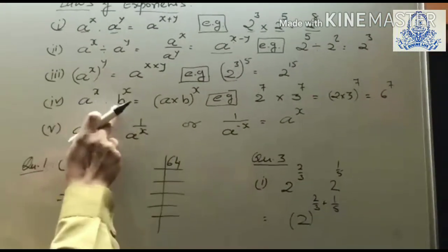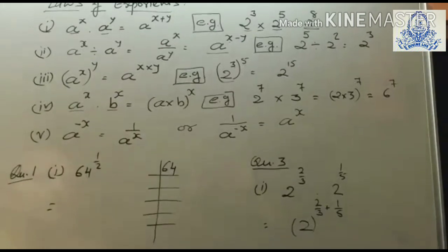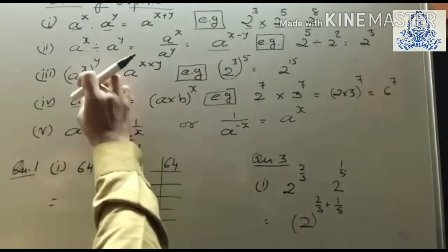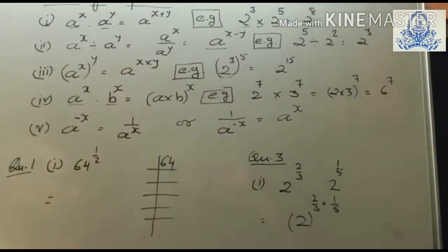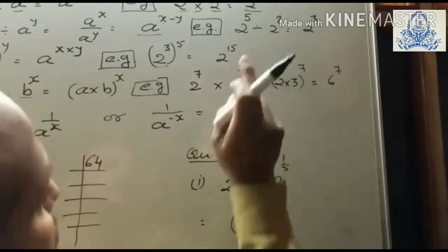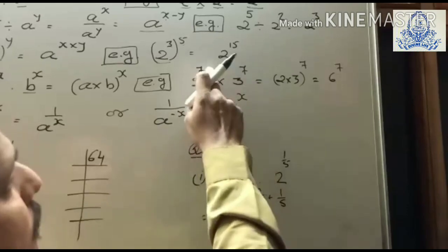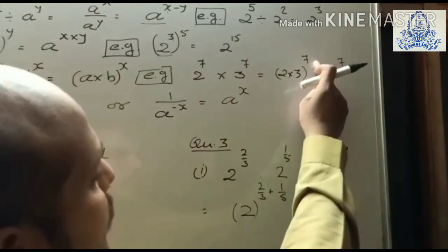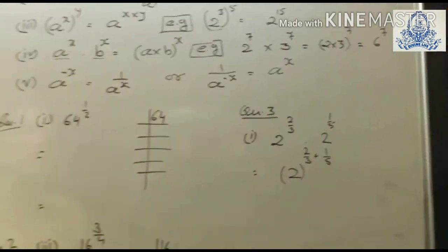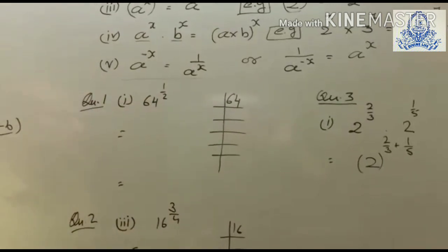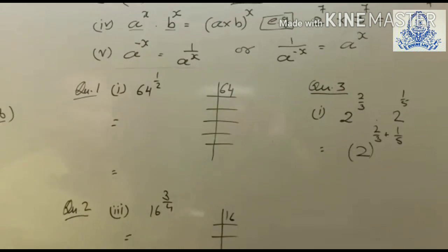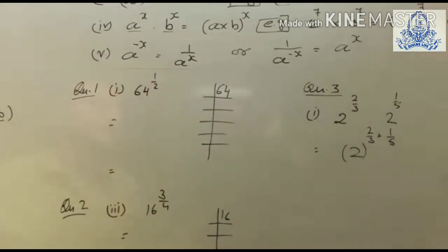Rule 4: If the bases are different but exponents are the same, multiply the bases and keep the common exponent. For example, 2⁷ × 3⁷ — base is different but power is same, so multiply the bases: 6⁷. Rule 5 (reciprocal): Taking the reciprocal of a number changes the sign of the exponent — a negative exponent becomes positive and vice versa.